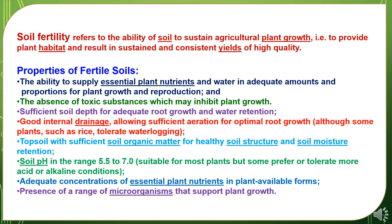Properties of fertile soils include: the ability to supply essential plant nutrients and water in adequate amounts and proportions for plant growth and reproduction; the absence of toxic substances which may inhibit plant growth; sufficient soil depth for adequate root growth and water retention; good internal drainage allowing sufficient aeration for optimal root growth, although some plants such as rice tolerate waterlogging; topsoil with sufficient organic matter for healthy soil structure and moisture retention; soil pH in the range of 5.5 to 7, which is suitable for most plants, but some prefer or tolerate more acid or alkaline conditions; adequate concentrations of essential plant nutrients in plant available forms; and presence of a range of microorganisms that support plant growth.